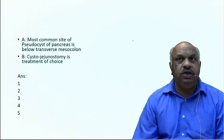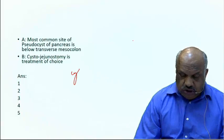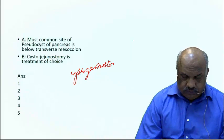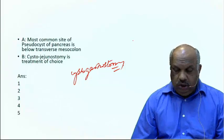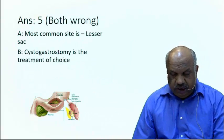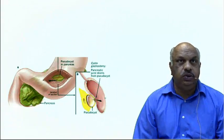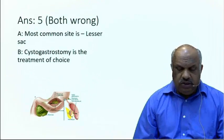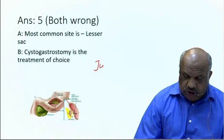The most common site being the lesser sac makes cystogastrostomy the treatment of choice — you anastomose the cyst with the posterior wall of the stomach. This is the most commonly performed surgery, also known as the Juarez procedure.